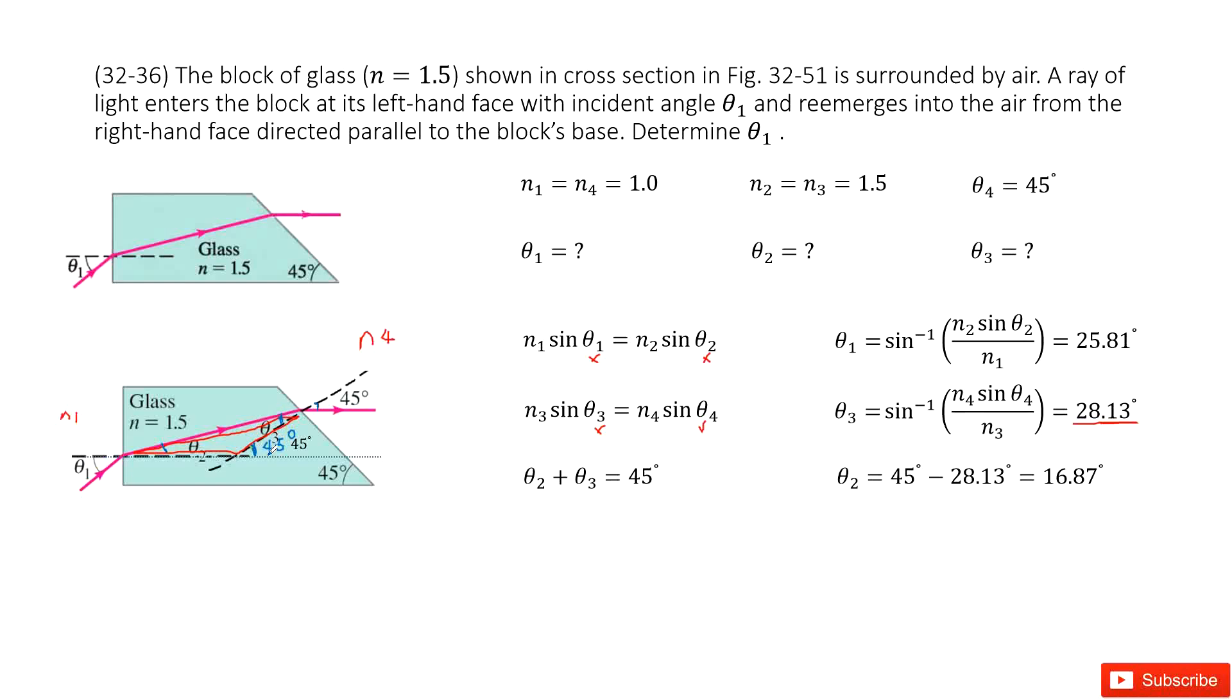After we draw this line, we know theta 2 plus theta 3 equals 45 degrees. Now we know theta 3 is given, so very easily we can get theta 2. Now theta 2 and theta 3 are found. In this part, theta 2 is given, so we convert this equation and can get theta 1.